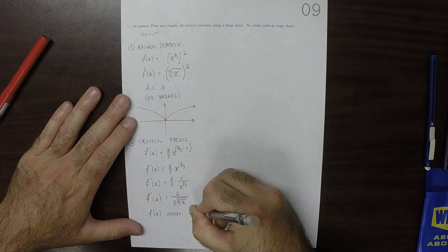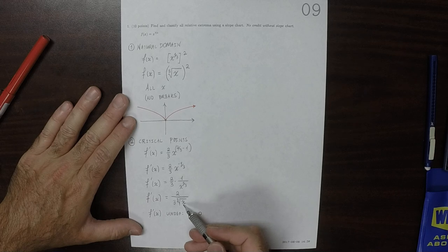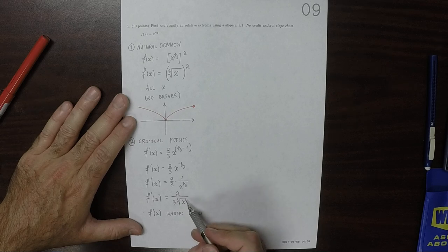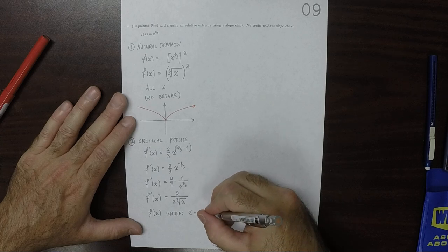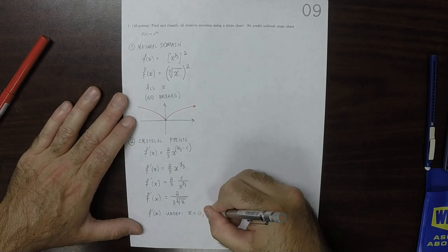At x equal to zero. You can't plug in zero, because the cube root of zero is zero. And therefore, if you were to attempt to plug in zero into this expression, you would be dividing by zero. So, the derivative is undefined at zero, because this is division by zero.